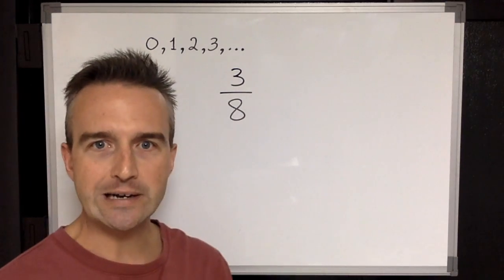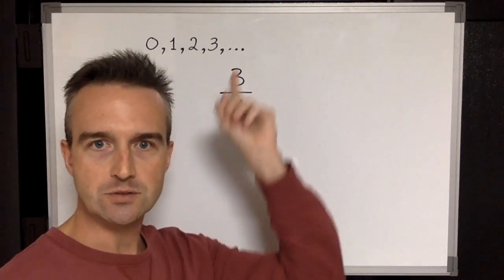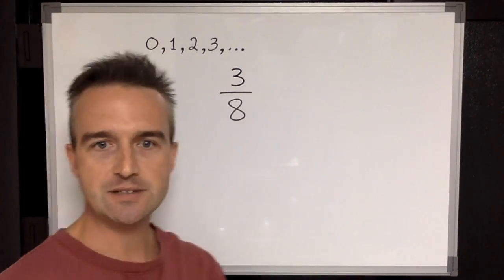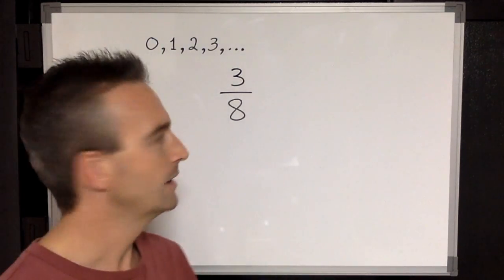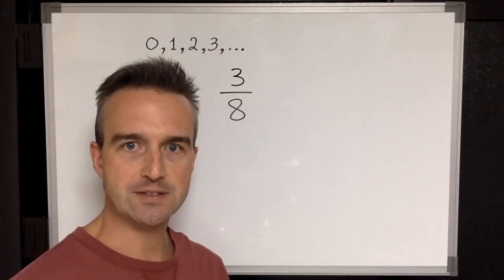So for example, if we are counting pizzas, we can count whole pizzas, right? One pizza, two pizza, three pizzas, zero pizzas. What this is, it's just part of one single pizza, but it's not a whole one. And in English we say three over eight or three-eighths.